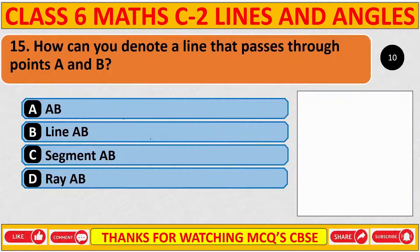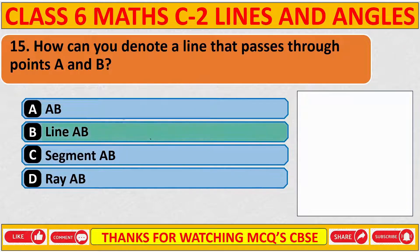How can you denote a line that passes through point A and B? The correct answer is B: line AB.